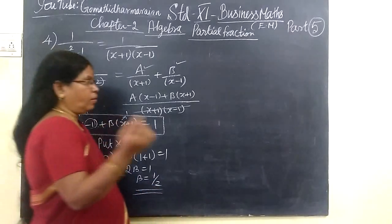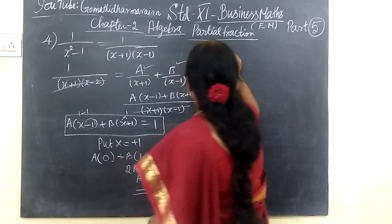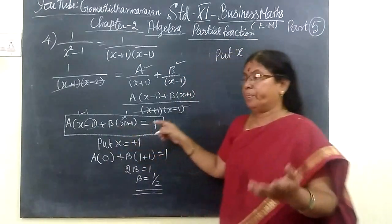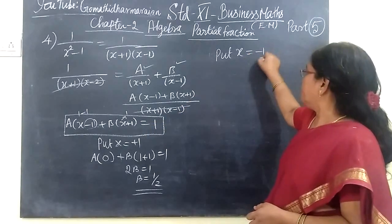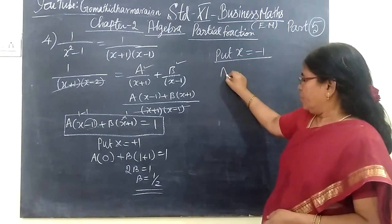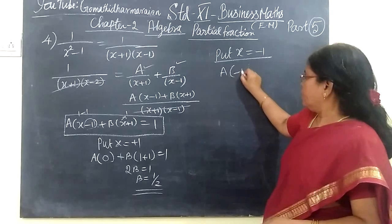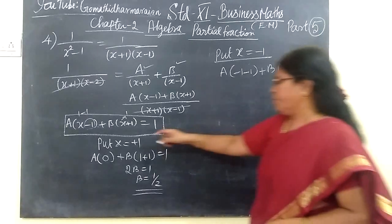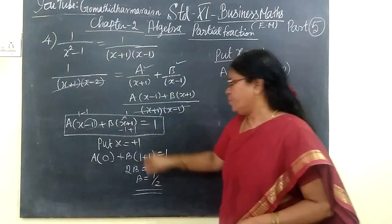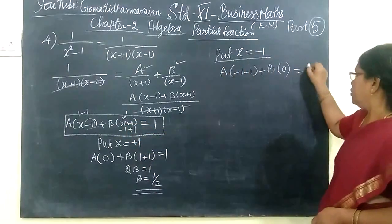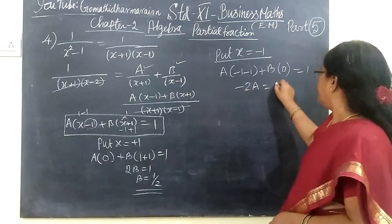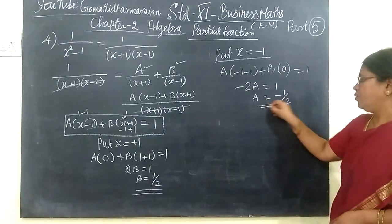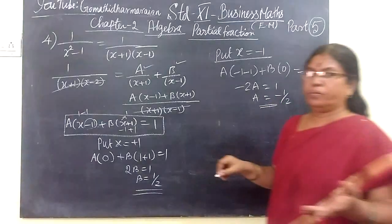Next, you are finding the value of A. Put S equal to minus 1. So A bracket — for S you are substituting minus 1. The S plus 1 term becomes 0. For the other term, minus 1 plus 1 is also 0. So minus 2A equal to 1, which implies A equal to minus 1 by 2. So we have found the values of A and B.